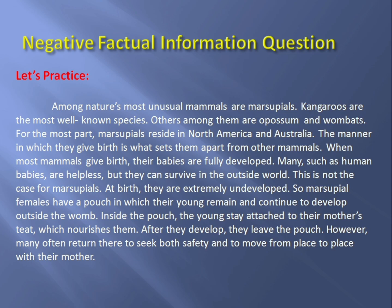'Many, such as human babies, are helpless but they can survive in the outside world. This is not the case for marsupials. At birth, they are extremely undeveloped. So marsupial females have a pouch in which their young remain and continue to develop outside the womb. Inside the pouch, the young stay attached to their mother's teats, which nourishes them.'